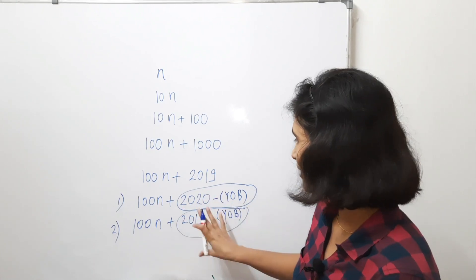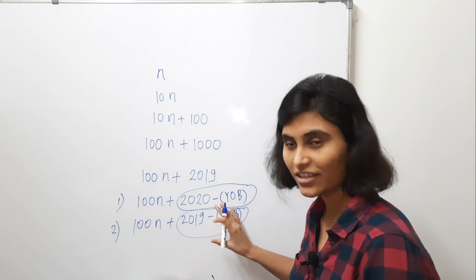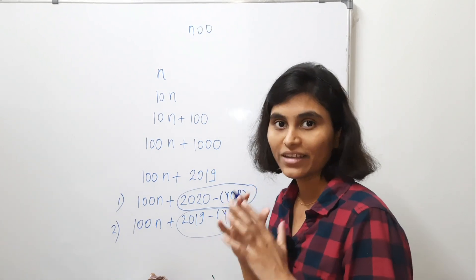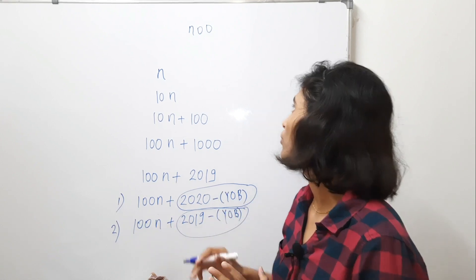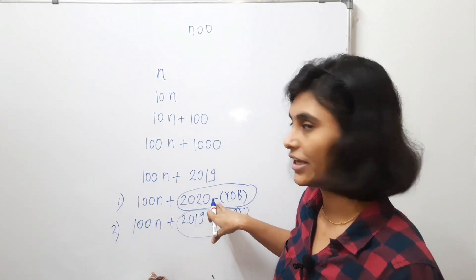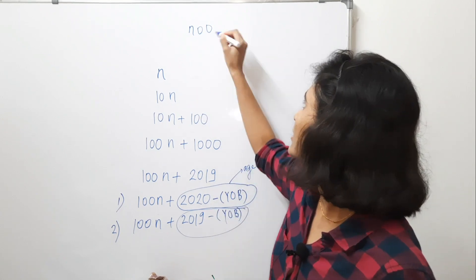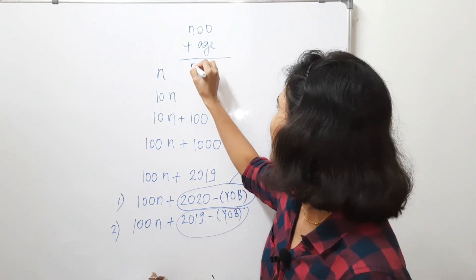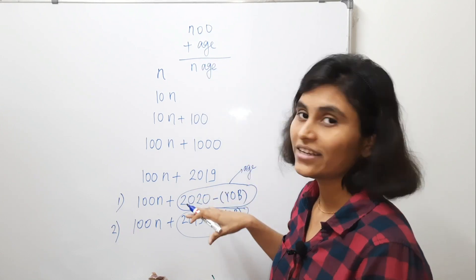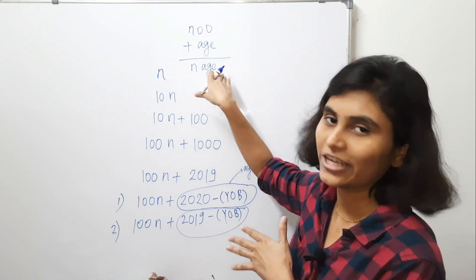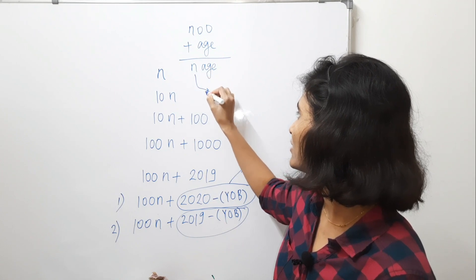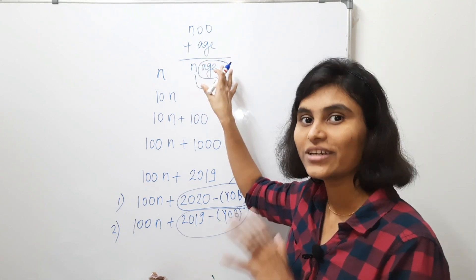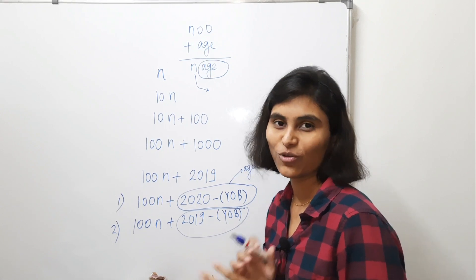Whatever the answer from this step, it will be your age. Now, 100 times n is just n00, where n is any non-zero number from 1 to 9. We are adding this to your age, so we have n00 + age, which gives a three-digit number of the form n followed by your age. Since there are two zeros, the first digit is n — the number you chose from your mobile number — and the last two digits are your age. I hope you find this interesting. Thank you for watching this video.